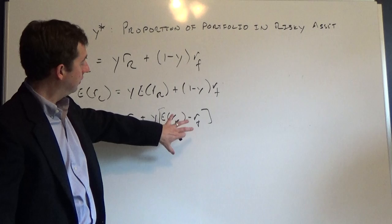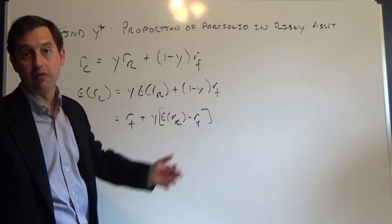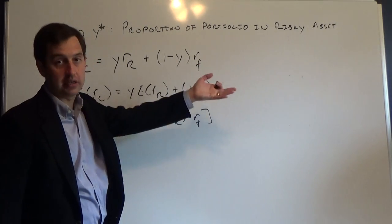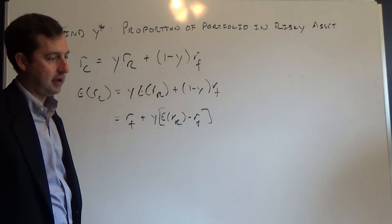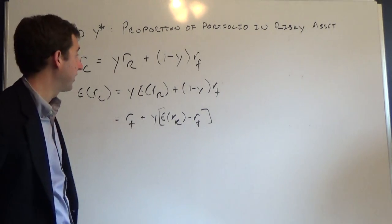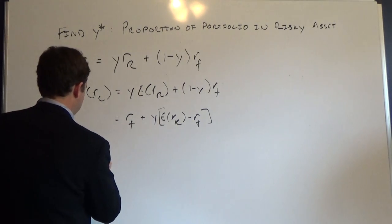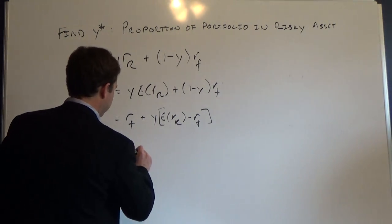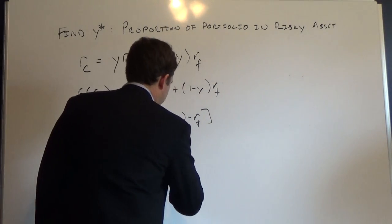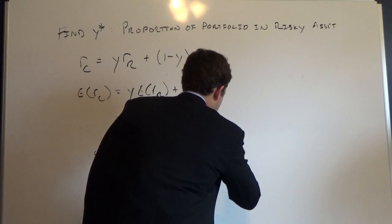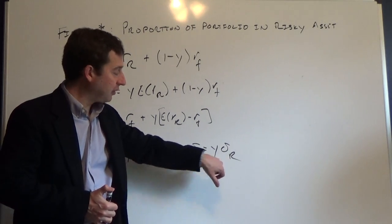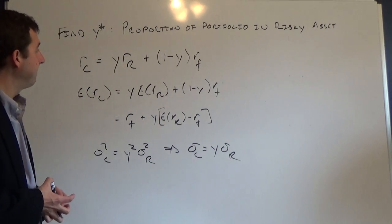The standard deviation calculation is simple. Since the risk-free rate is a constant, it drops out of the variance calculation. The variance of the complete portfolio is just Y² times the variance of the risky portfolio. This implies the standard deviation of the complete portfolio is just the standard deviation of the risky portfolio times Y, the amount we have in the risky portfolio.